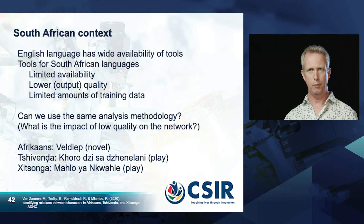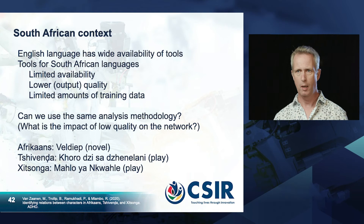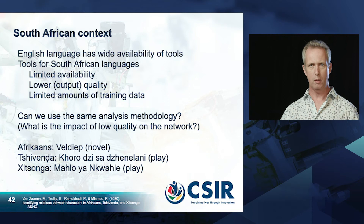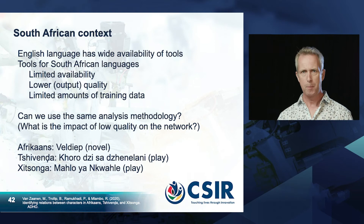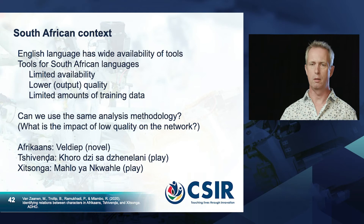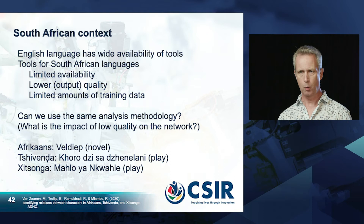The question then is what happens when you apply this to South African text. English has a wide range of available tools for identifying named entities, and these tools also exist for South African languages, but availability is quite limited and quality is not particularly high — mostly because of limited amounts of training data. However, the approach may still yield useful information because of the frequency of occurrences of main characters. This has been done for three languages: Afrikaans, Chivenda and Xitsonga.